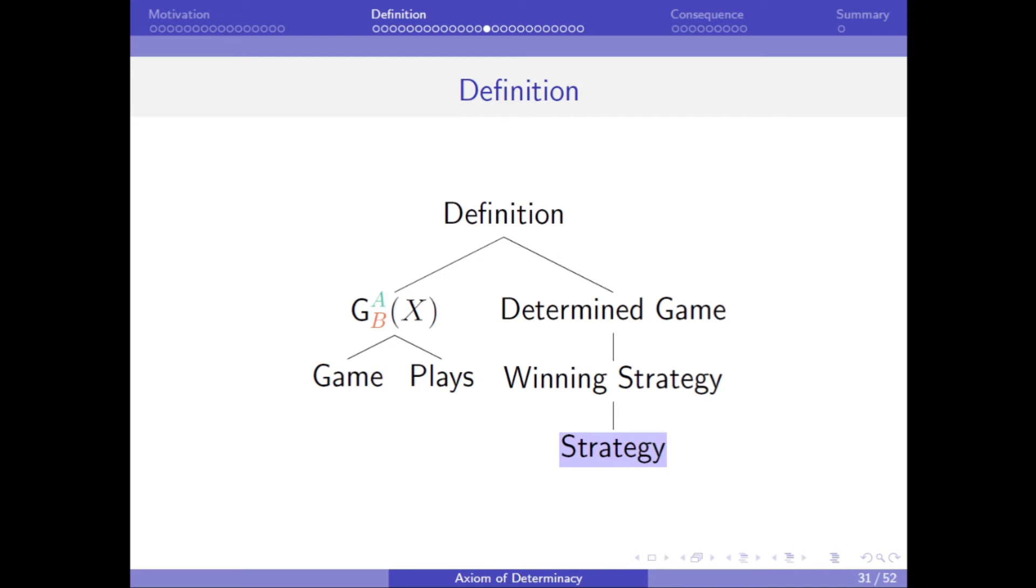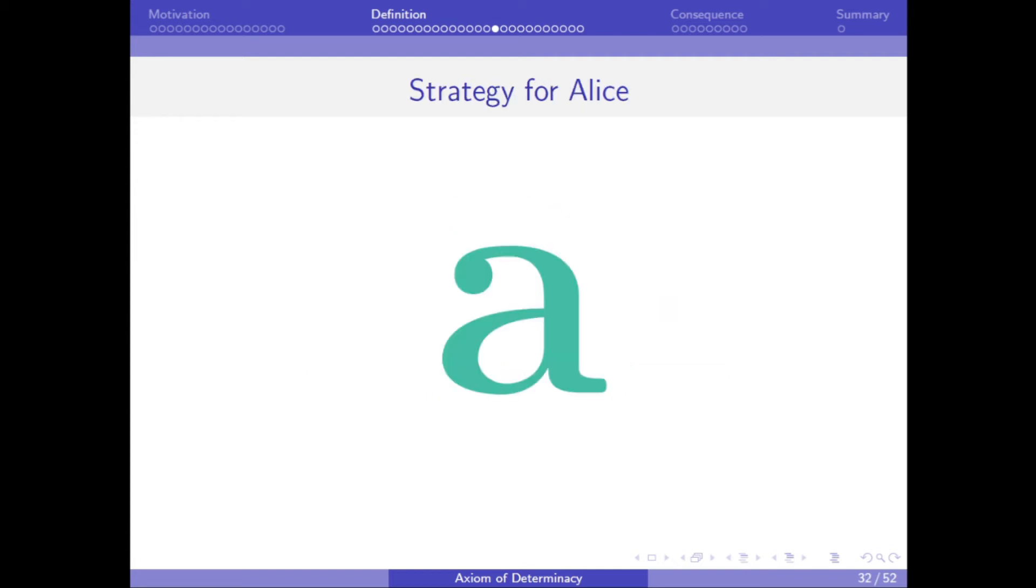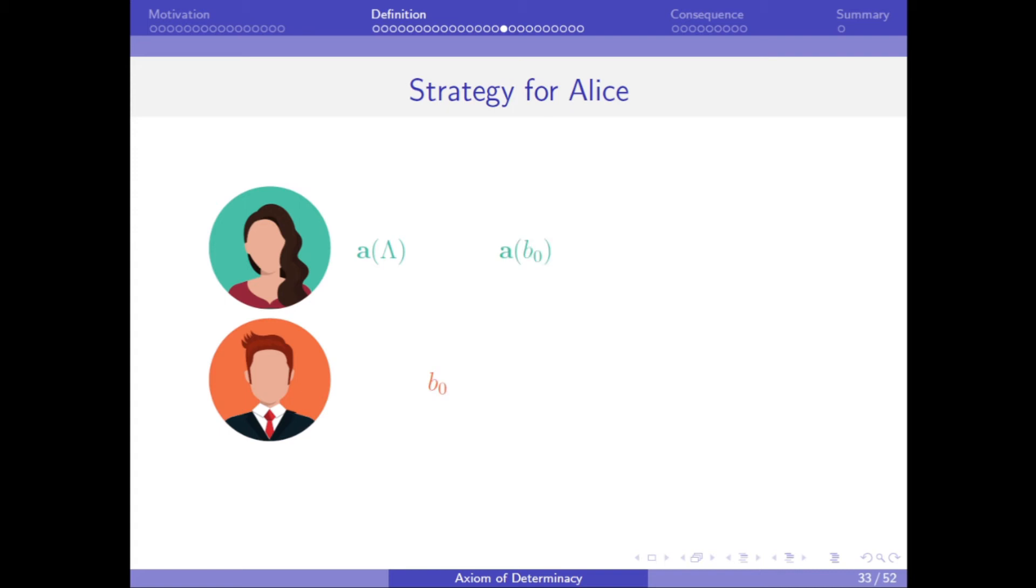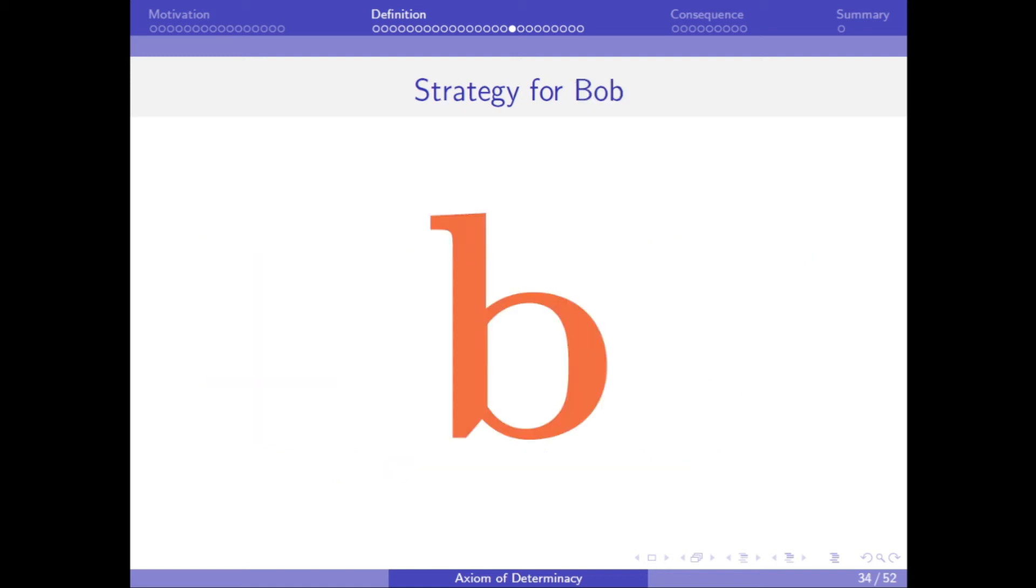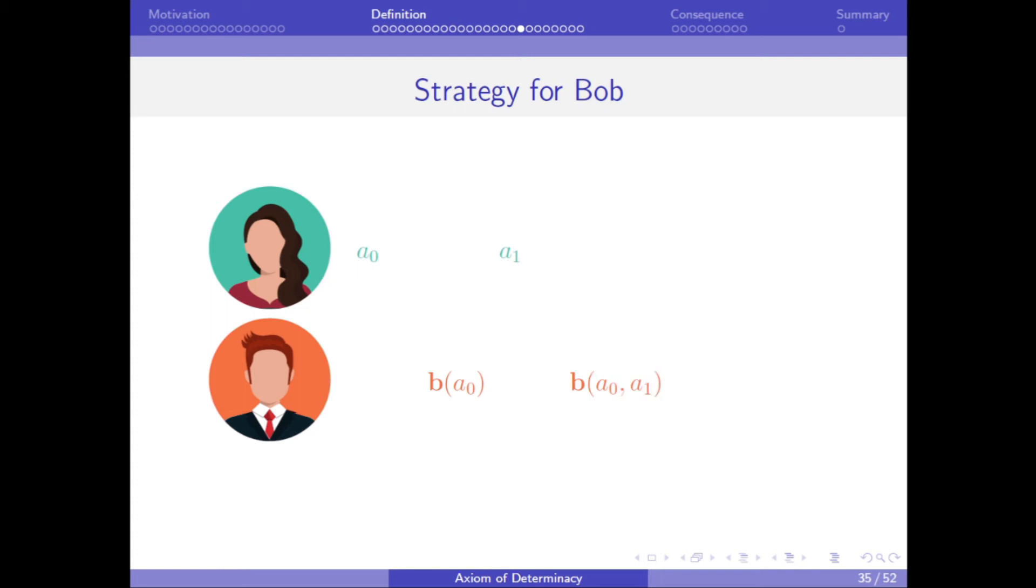Like for games in everyday life, Alice and Bob can play according to a strategy, which dictates how to respond to the other player's previous moves. In particular, we will call a strategy for Alice, bold A. Because Alice goes first, her strategy must determine her first move based on no moves from Bob, which we represent here using a capital lambda. And then Alice's strategy must determine her moves based on Bob's previous moves, until she is given an infinite sequence of moves. And we represent such an infinite sequence as A of the infinite sequence of Bob's moves. Similarly, we will use a bold B to represent a strategy for Bob. And, as before, Bob's strategy gives the infinite sequence of moves based on Alice's previous moves. And we represent such an infinite sequence as B of the infinite sequence of Bob's moves.